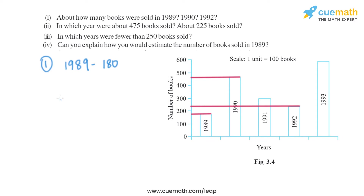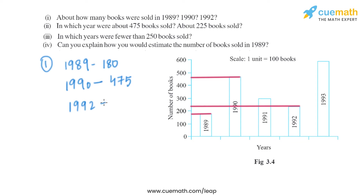Now let's move on to 1990. Looking at the graph, we can see that around 475 books were sold in 1990, as it is closer to 500. If we look at 1992, it is close to 200, so we can say that approximately 225 books were sold in 1992.